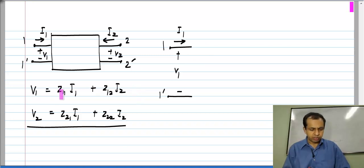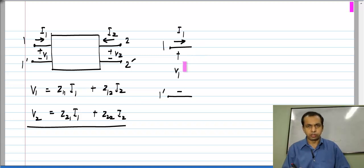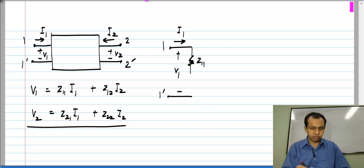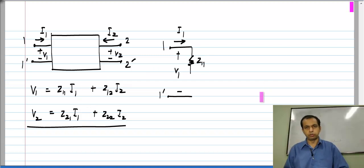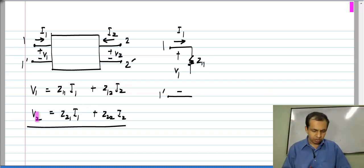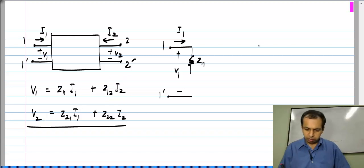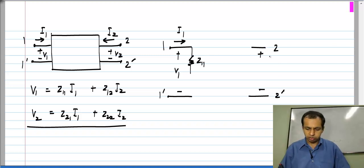The first term is Z11 times I1 — a voltage drop proportional to the current flowing through the port. So if I have a resistance whose value is Z11, the voltage across it will be Z11·I1 because I1 flows through Z11. The second part, Z12 times I2, depends on the current elsewhere in the circuit, that is in port 2.